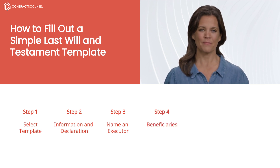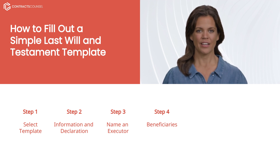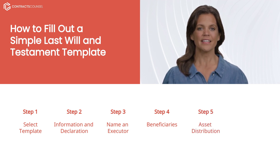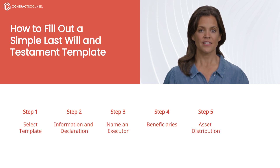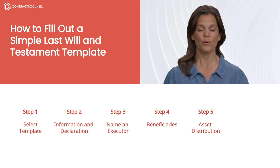Step four, list beneficiaries and guardianship: specify your beneficiaries and any guardians for minor children, if applicable, to ensure your family is protected. Step five, detail asset distribution and funeral wishes: clearly outline how you would like your assets divided among beneficiaries, and include any funeral or burial preferences, if you wish.